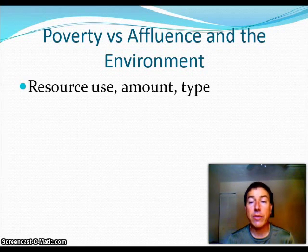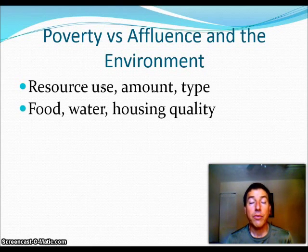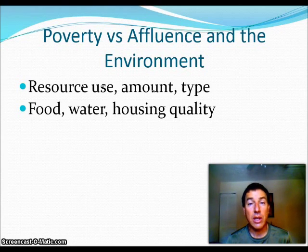When we look at poverty versus affluence, we think about resource use — how much of the resource do we use, what types, how do we use them, and what do we do when we're done? Food, housing, and water — developed nations usually have pretty good food, good water quality, good housing quality. Whereas in those developing nations, a lot of this stuff is not high quality, a lot of it produces disease, and it's a reason for high death rates in those countries.